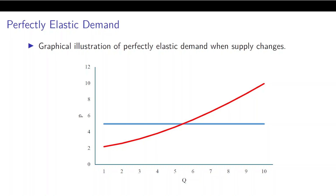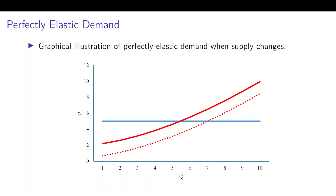Graphically, perfectly elastic demand is represented by a horizontal demand curve with an upward-sloping supply curve. When a new farmer enters and the supply curve shifts, the farmer can sell wheat only at the existing market price. If the farmer charges a higher price, no wheat is sold. Therefore the price does not change at all but the quantity consumed expands. The elasticity in this case is essentially infinity.